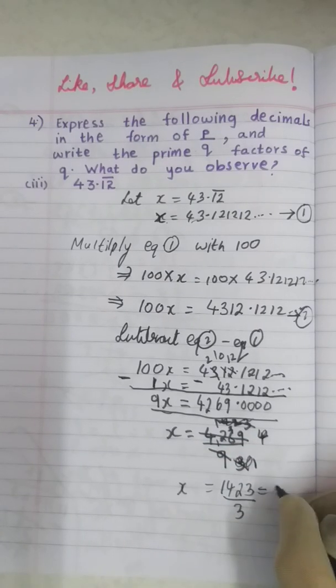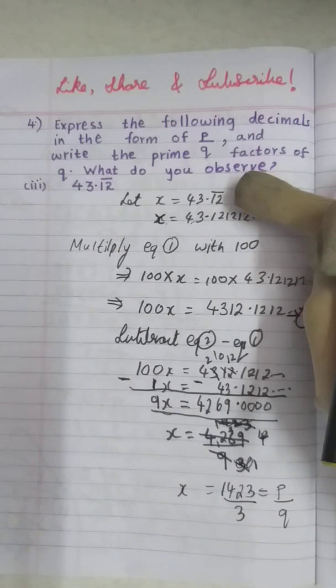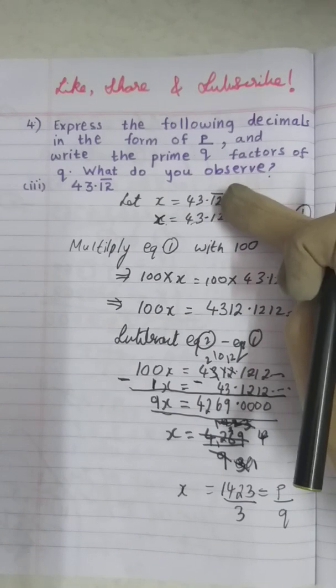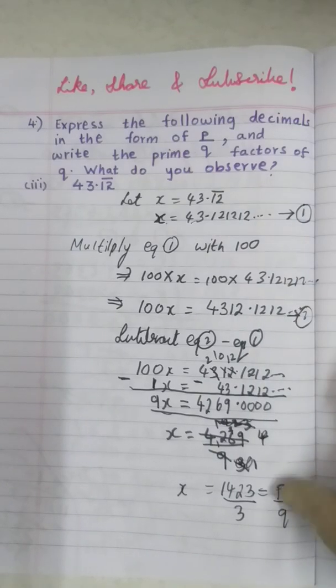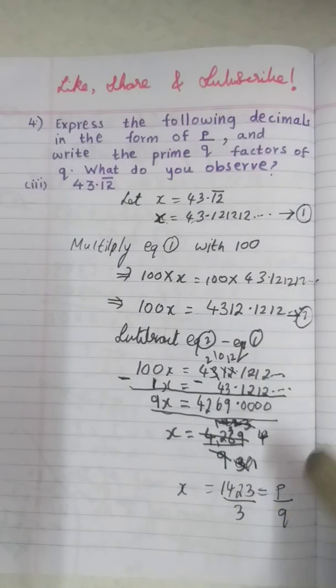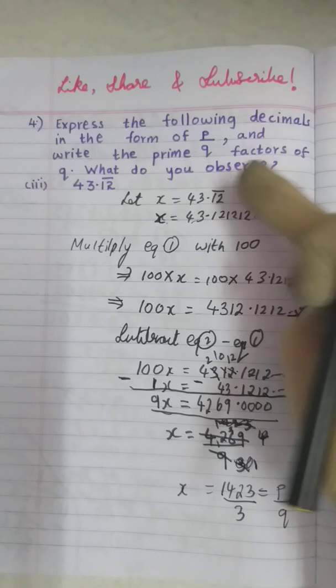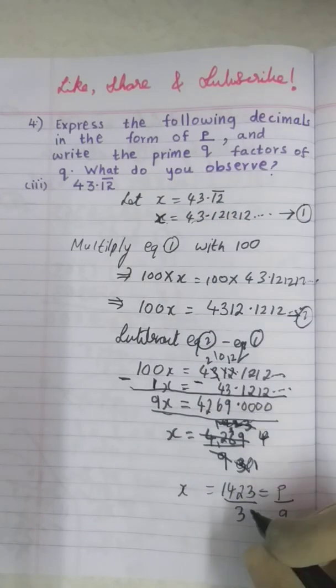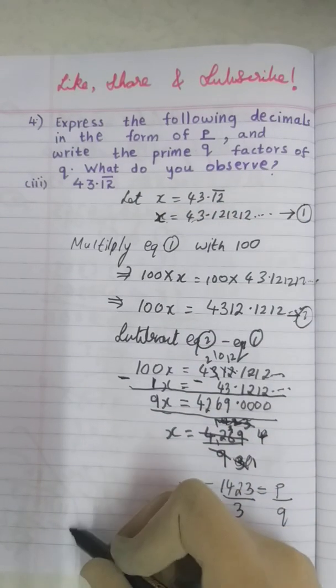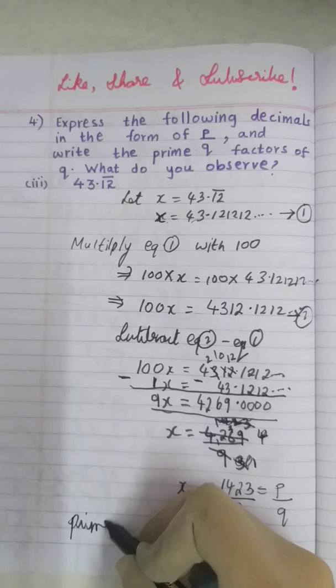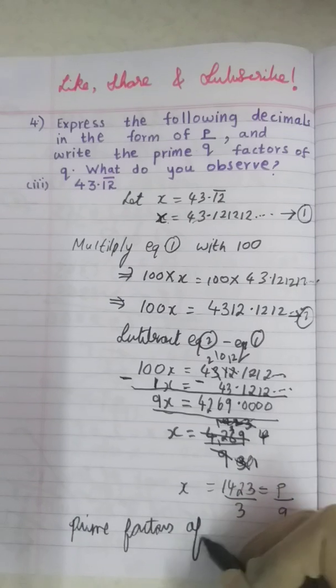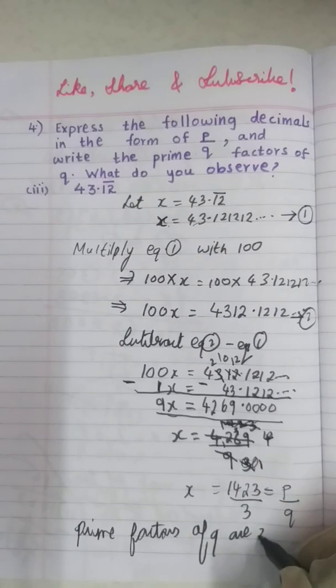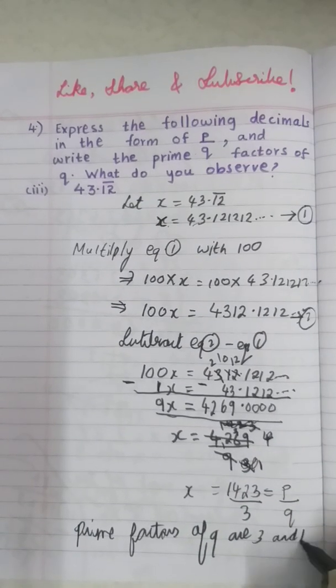So this is my x. So I have successfully converted this decimal form which was non-terminating repeating into a rational form. But it also asked me, write the prime factors of q. So what are the prime factors of q? Prime factors of q are, q means it is denominator. Here the prime factor of q is only 3 and 1. So prime factors of q are only 3 and 1.